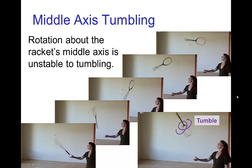However, the third axis which is perpendicular to those is this sort of somersault axis. And when the racket is thrown that way, it will almost always tumble. So it's unstable to going into a tumbling motion.